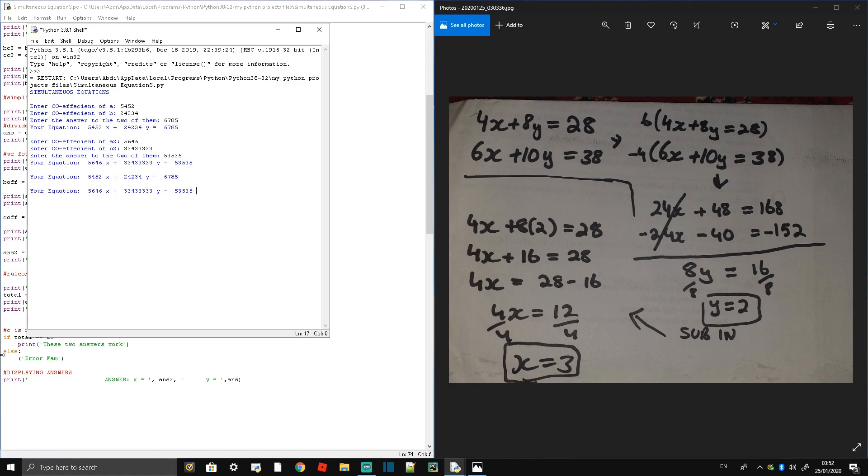And the way we can do that is sub the two answers we got back into one of the original equations. If that value is equal to the result—say the first one, 28—and when you sub it back in you also get 28, then it's going to print 'these two answers work.'